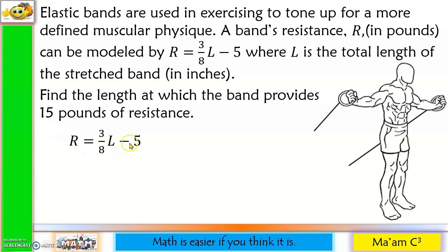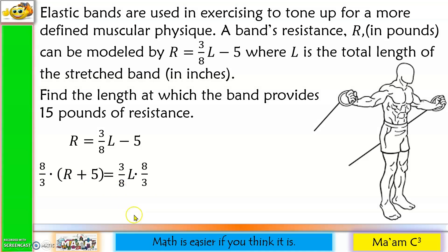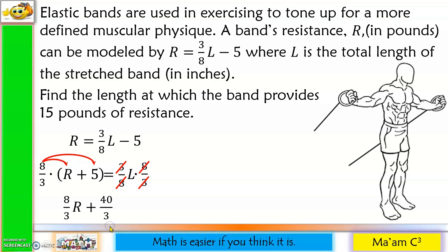To do that, let us move negative 5 to the other side, so it becomes R plus 5 equals 3/8 of L. To solve for L, we have to eliminate 3/8, and we can do that by multiplying both sides by its reciprocal. So let us multiply both sides by 8/3. 3 and 3 will be cancelled out, as well as 8 and 8. For this side, 8/3 times R is 8R/3, and 8 times 5 is 40 divided by 3, so plus 40/3 equals L.